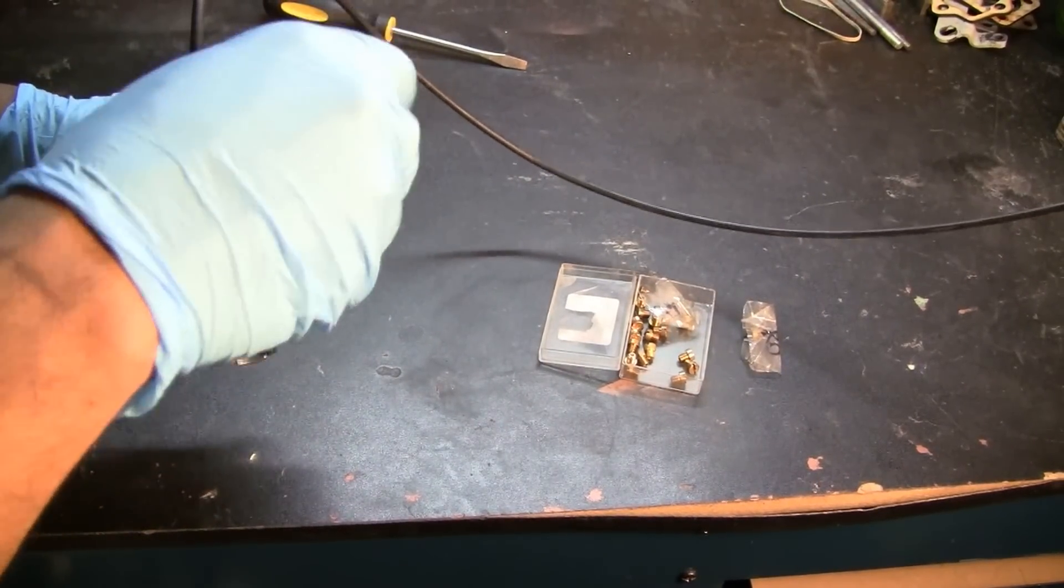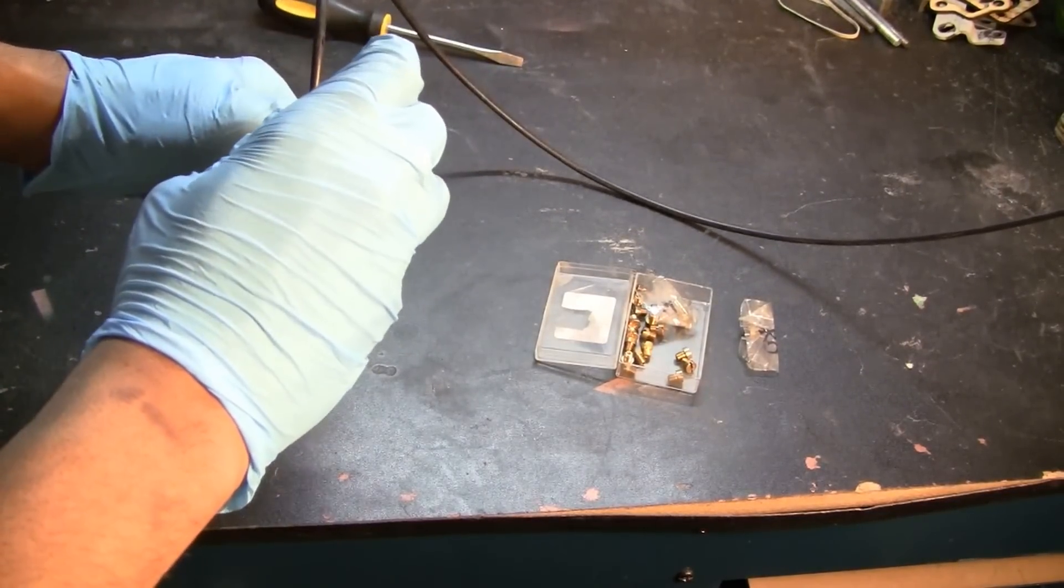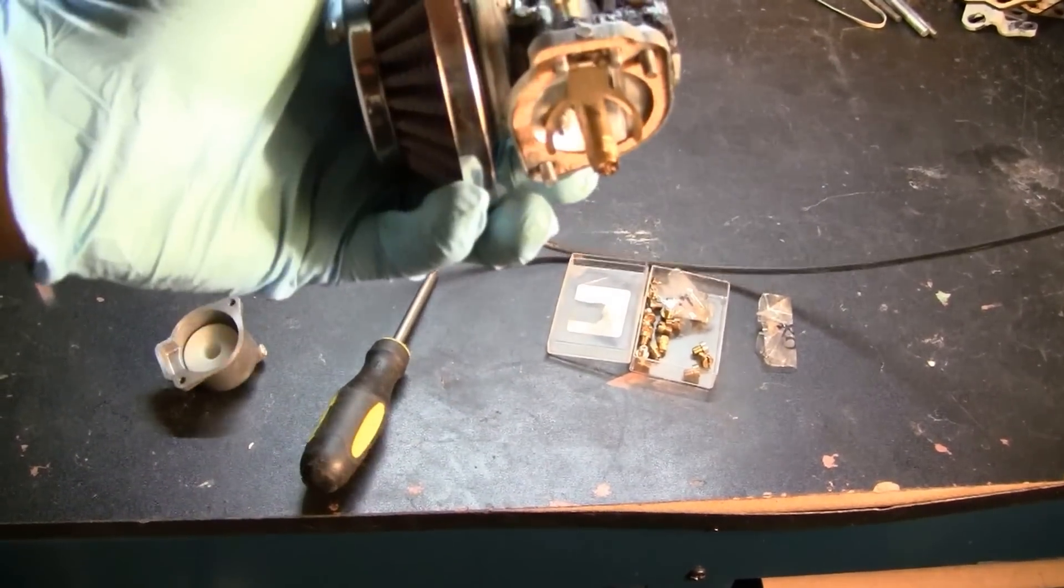After you unscrew them, you're going to be exposing the whole fuel bowl assembly along with the carburetor jets. They should come out nice and easy. This is what you should see, hopefully.